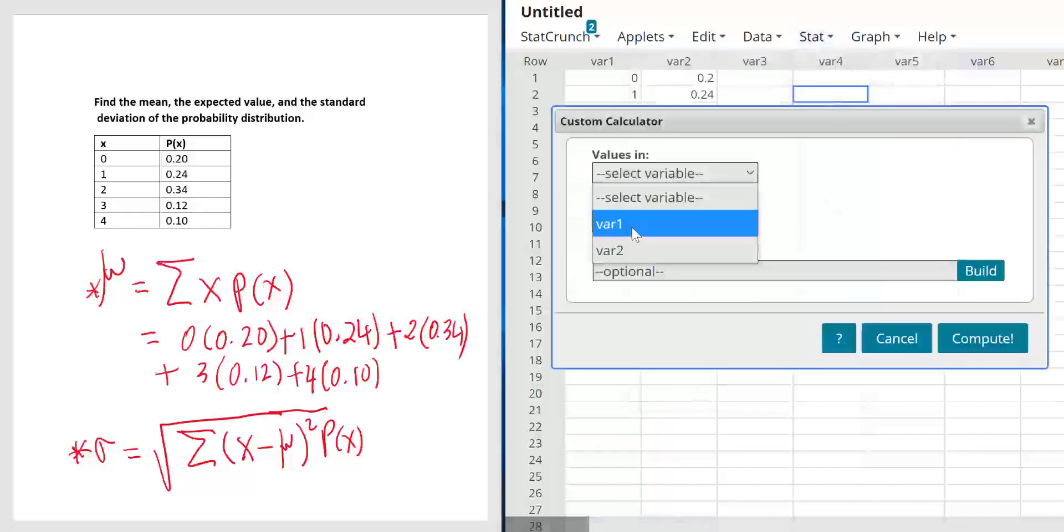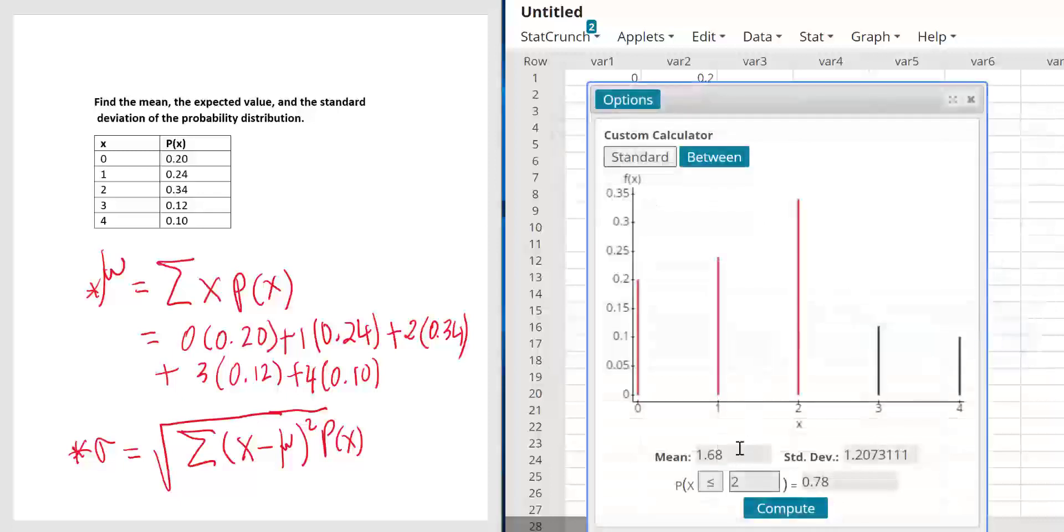Our values are in variable 1. Choose variable 1. The weights, which are the frequency, the probabilities, are in variable 2. That's the important part, and hit compute. And here you go. We're done.